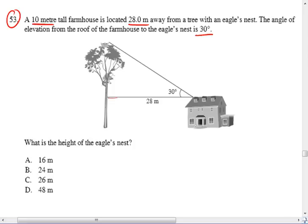There's that 28 meter distance there, and there's the angle of elevation from the roof of the farmhouse up to the eagle's nest. What's not shown on this diagram is that the farmhouse is 10 meters tall, as was given right at the start of the problem.